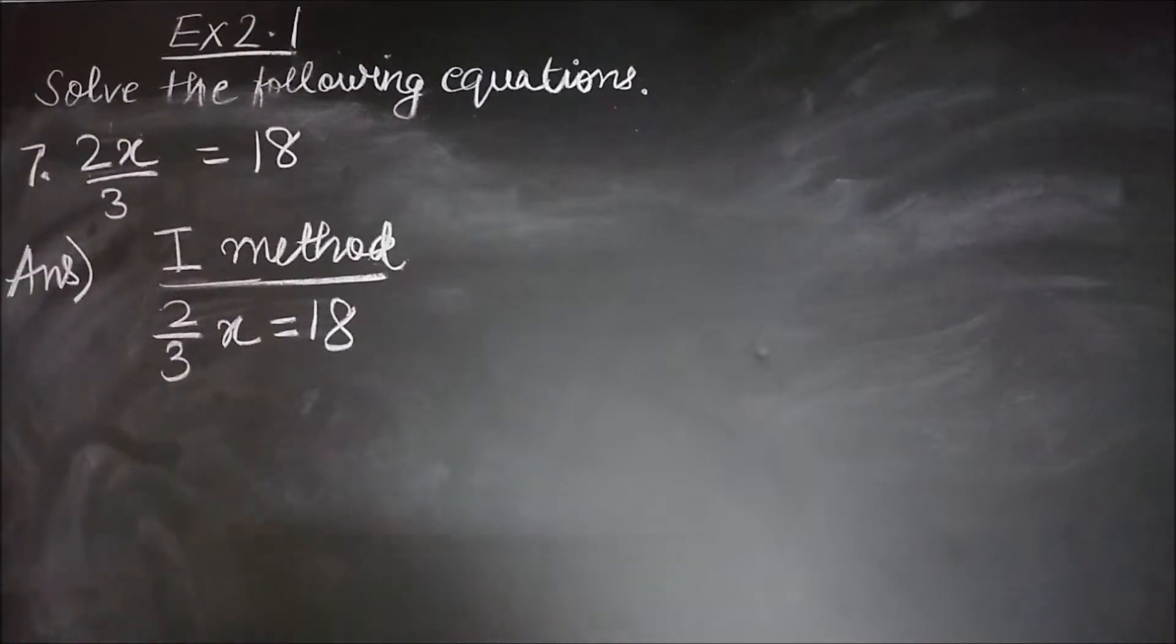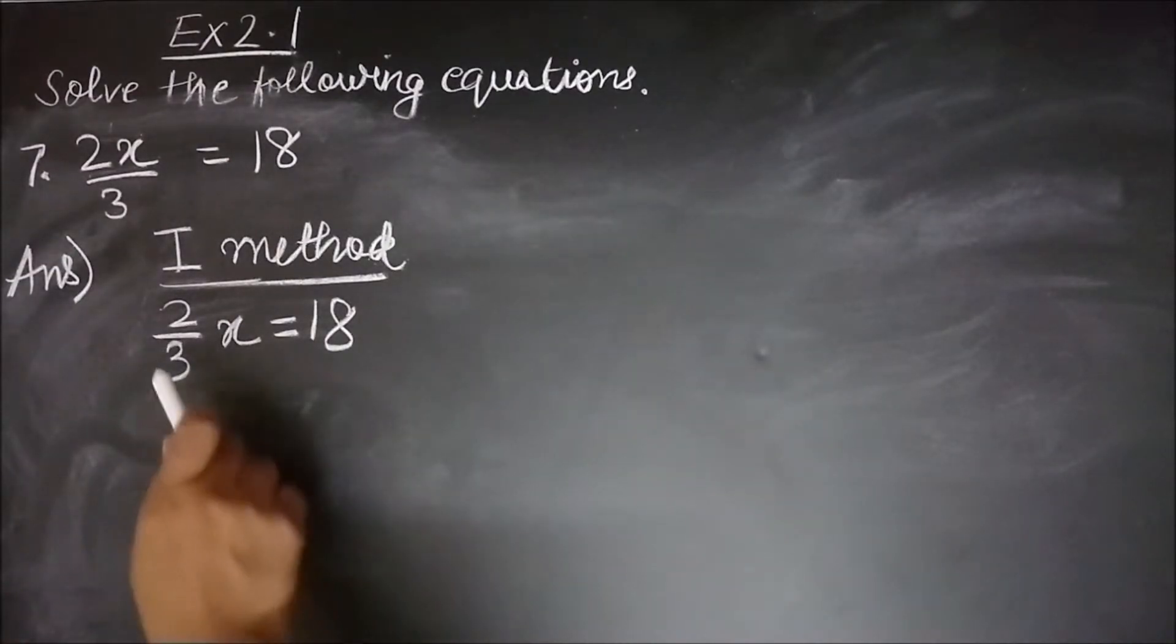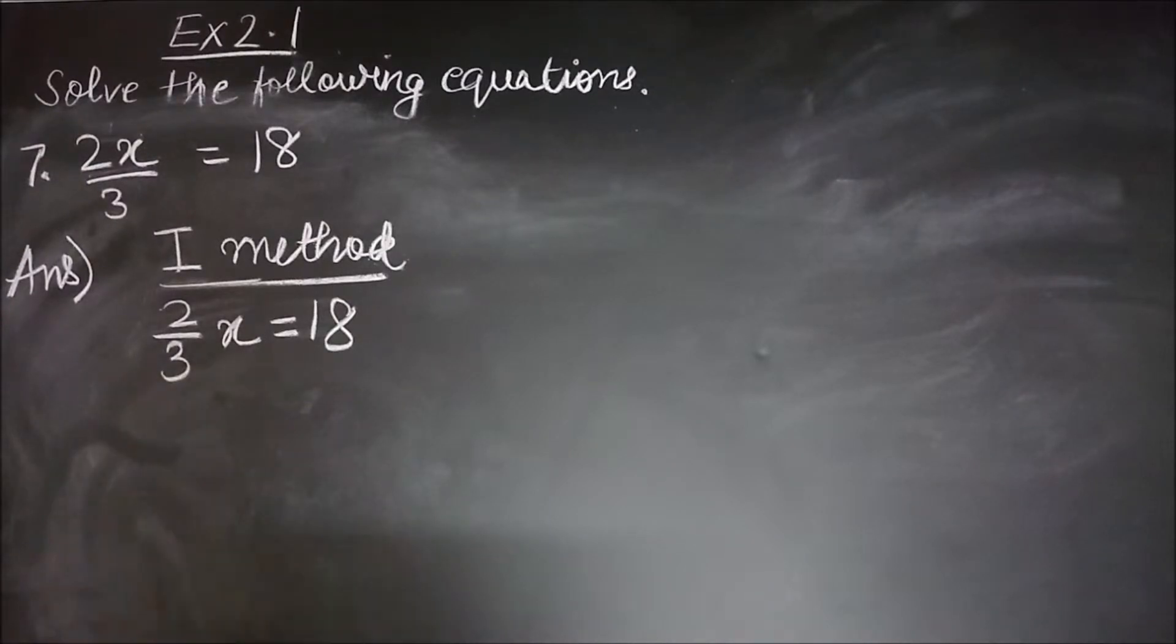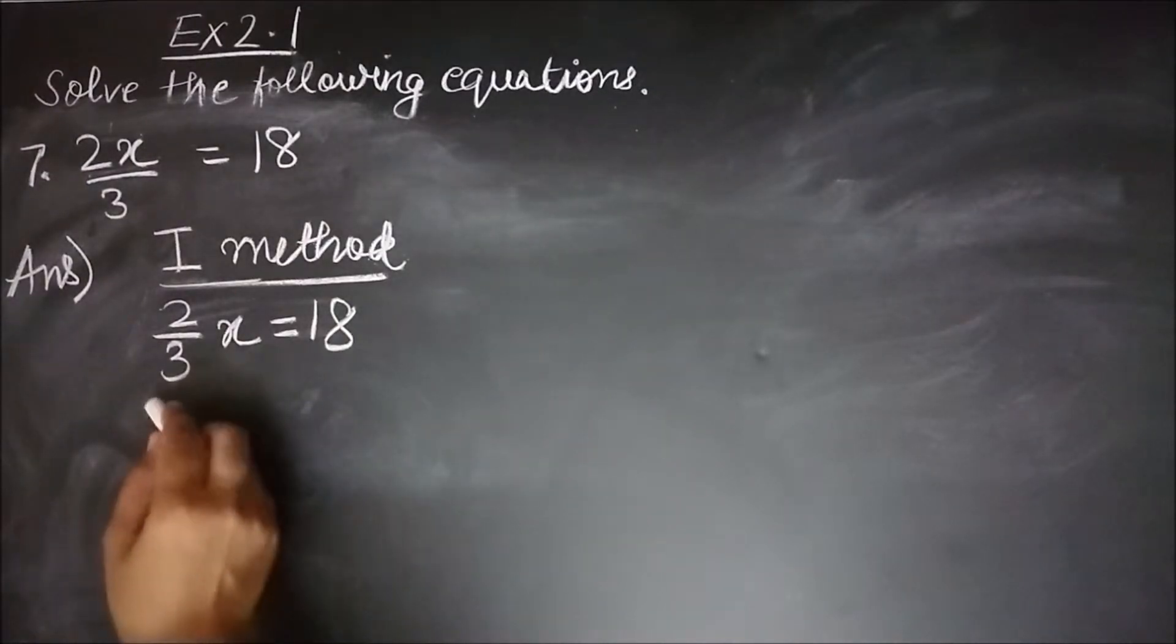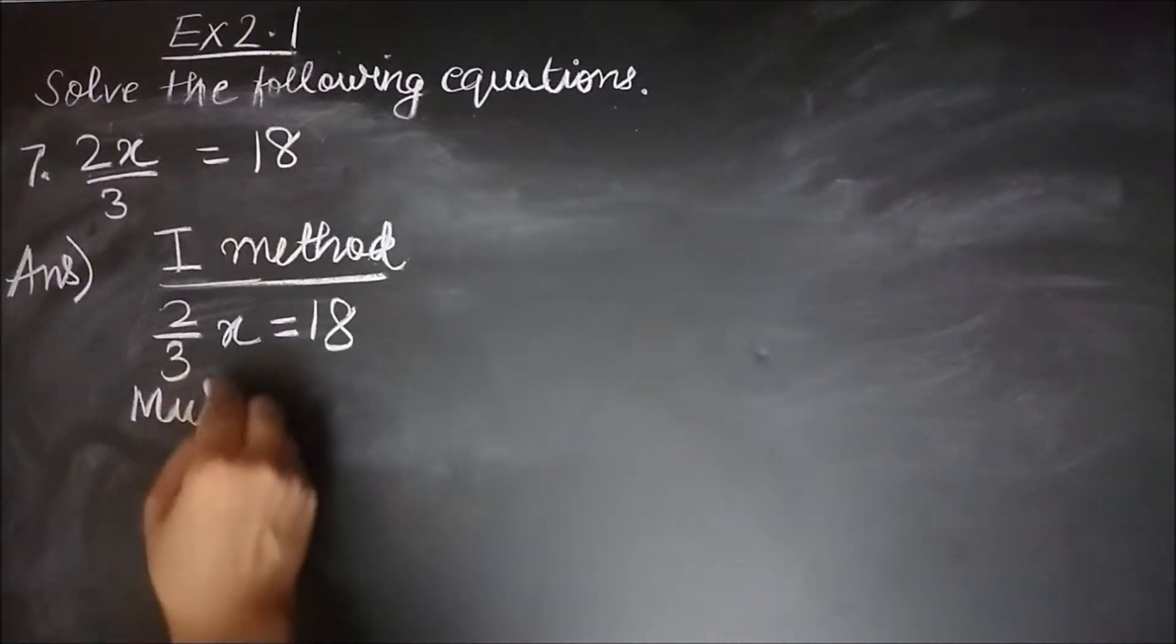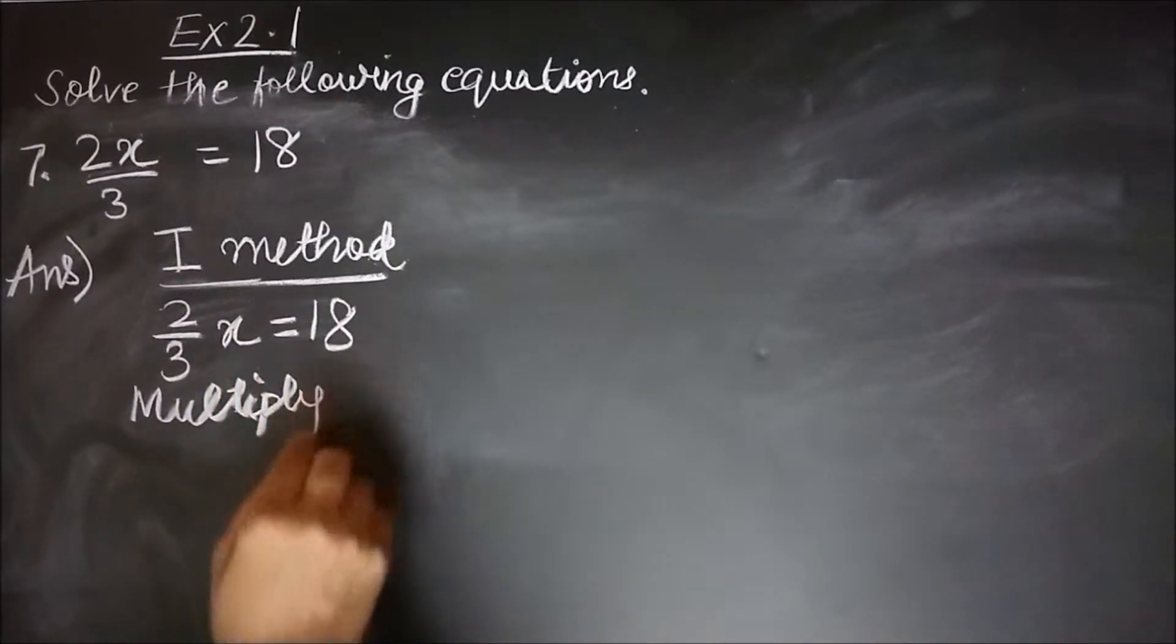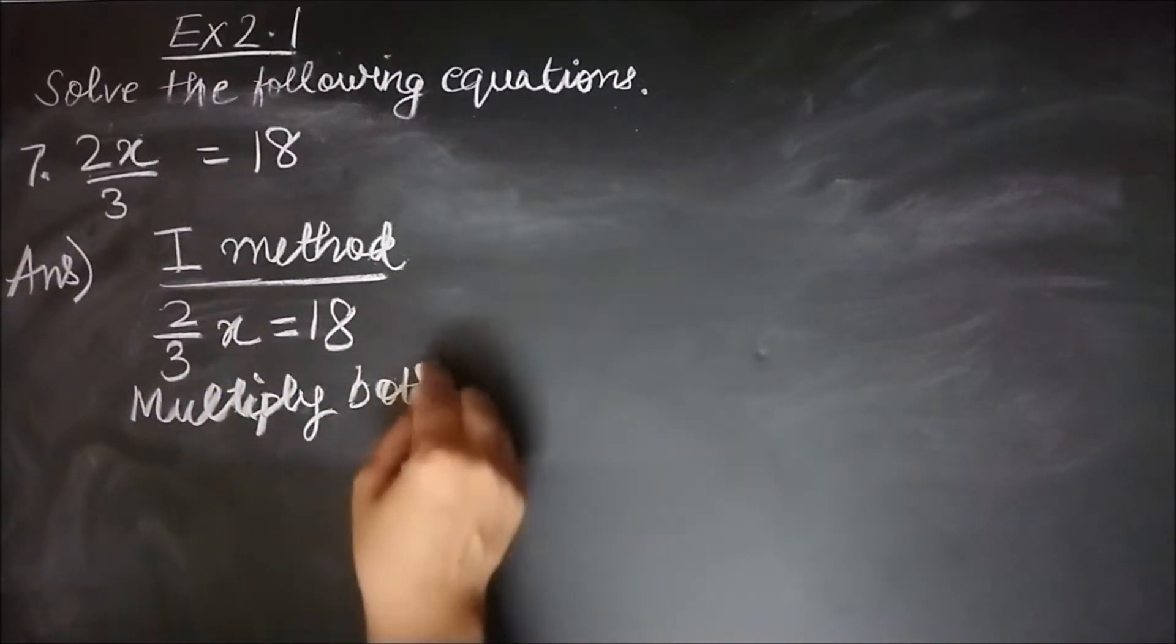3 is getting divided here, so I need to multiply by 3 so that this 3 is removed. I will say multiply both sides by 3.